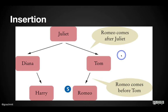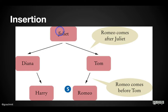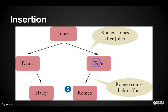Now, what if we want to insert a node into a binary search tree? We start off the same way as finding a node. Let's say we want to insert Romeo. Romeo is not yet in the tree. We start at the root and ask: is Romeo less than or greater than Juliet? Romeo is greater than Juliet, so we go right. Is Romeo less than or greater than Tom? Romeo is less than Tom, so we go left. But if Tom has no left child, we put Romeo right there — Romeo becomes the new left child of Tom. We search through the tree until we find that the direction we want to go has no child — it's null — and that's where we insert the new node.